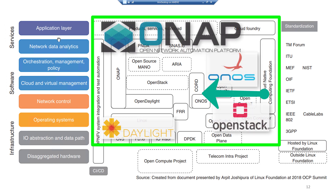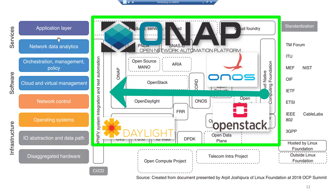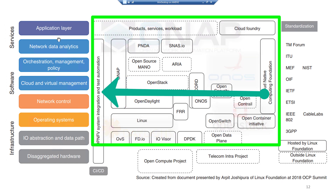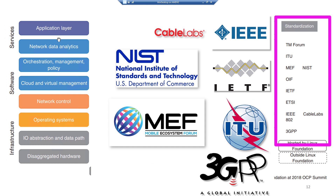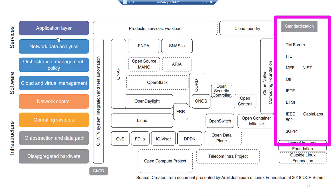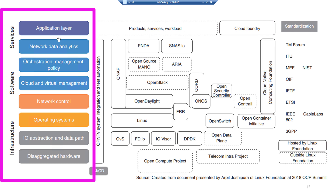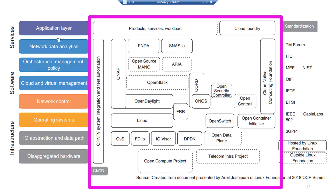In the center of the diagram are the various open source projects run by the Linux Foundation, connecting to these various layers. On the right-hand side are the standards bodies: IEEE, Cable Labs for broadband, 3GPP for mobile carriers, the Internet Engineering Task Force, and the ITU. In the center are open source projects connecting to the modules that make up SDN.